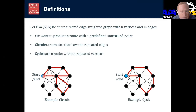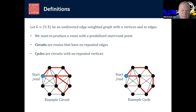A circuit is basically a route around the graph which starts and ends at the same point and doesn't use an edge more than once. So you can see, for example, if I was following this, I would get to here, then go down here, then come back to the same node or intersection on the map and then end. So that's a circuit.